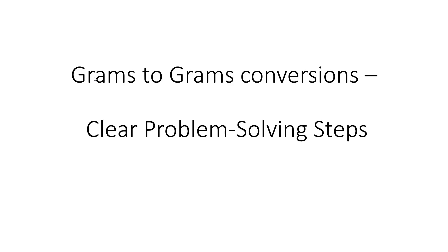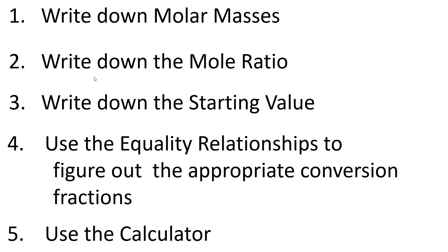First, I'm going to tell you the basic steps you need to solve a grams-to-grams conversion problem. You need to know the molar masses of both of the chemicals they ask you about. You need to know the mole ratio between the chemicals from the chemical equation they gave you. And you need a starting value. You use equality relationships from these first two steps to figure out the appropriate conversion factors, then you multiply them with the calculator, and it gives you the answer.